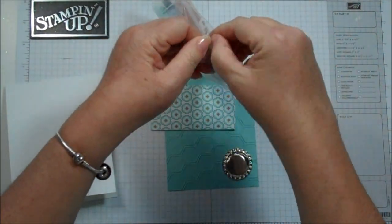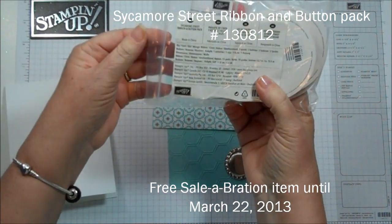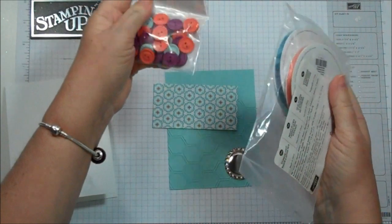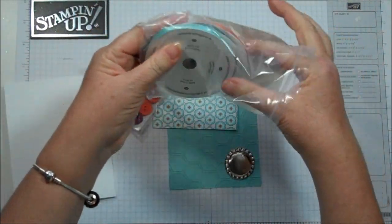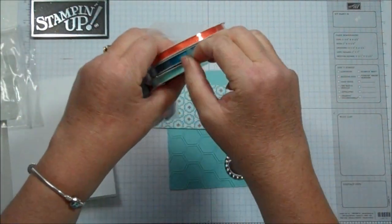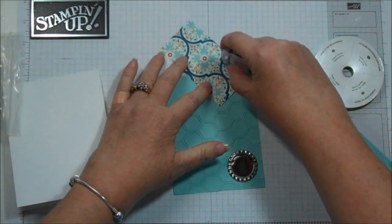So now we're going to use the Ribbon and the Button Bundle. It's the Sycamore Street Ribbon and Bundle Package. You get both items, or actually the buttons and three colors of the ribbon. And this is in the Celebration Mini right now. We're going to use the Pool Party color.